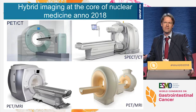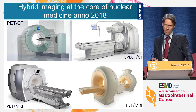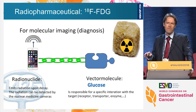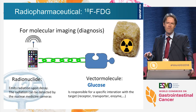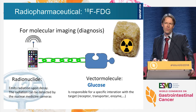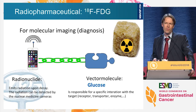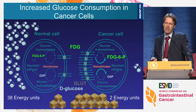In 2018, PET scanners alone don't exist anymore. We combine them with CTs and with MRs that give us morphological information. The radiopharmaceutical I'm going to talk about is FDG. There is a wealth of other radiopharmaceuticals, but for response imaging FDG is still our prime molecule. It consists of a glucose moiety to which we attach the radionuclide fluorine-18, which is responsible for the signal we pick up with our scanners — basically, we are using radioactive sugar.